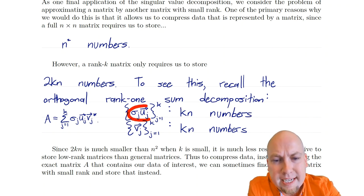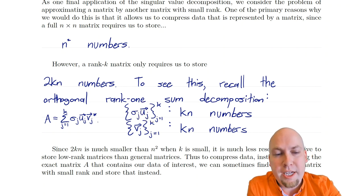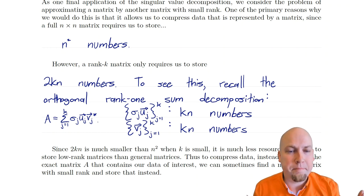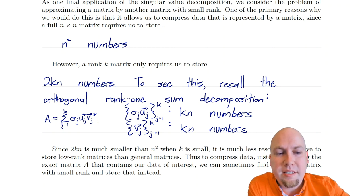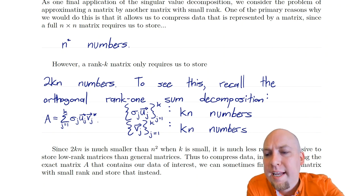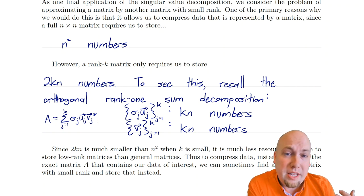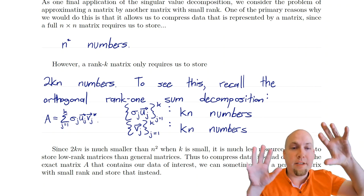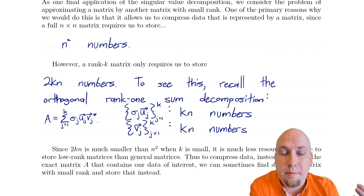The reason for multiplying the sigmas into the U's is just to make storage slightly more efficient — if you store the sigmas separately, you'd have extra numbers you don't actually need. So it's slightly more efficient to absorb the sigmas into the U's. The point is: if the rank K is small, then two times K times n is much smaller than n squared, making this a more efficient way to store the matrix by listing entries of its orthogonal rank-one sum decomposition.